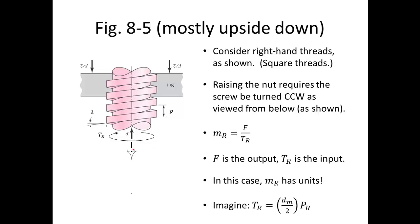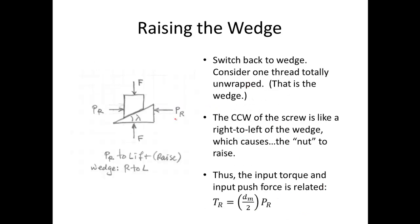Raising the nut requires the screw to be turned counter-clockwise as viewed from below. The mechanical advantage, strictly speaking from a screw standpoint, is the output force divided by the input torque. In this case the mechanical advantage has units, since you have a force divided by a torque. We can take the mean diameter divided by 2 — the radius — and relate that torque, the raising torque, to a raising force. The raising force is the force associated with the wedge.